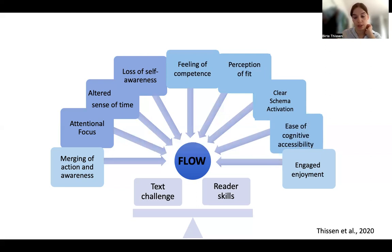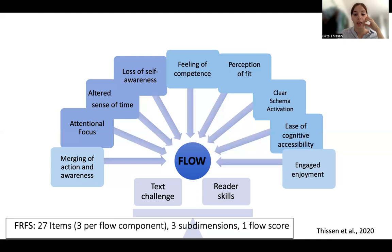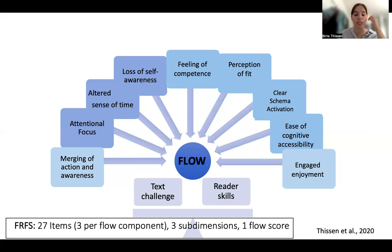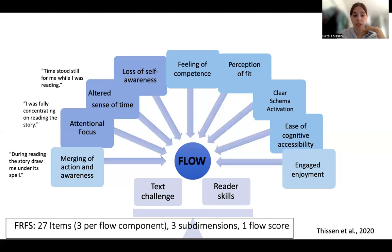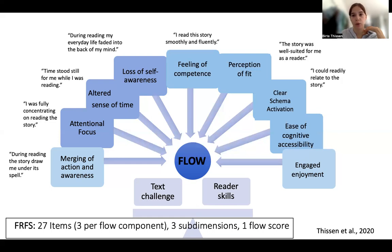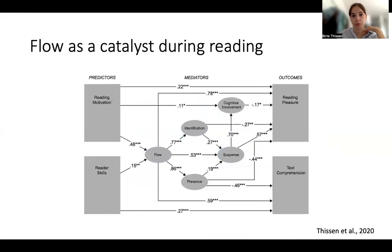Starting from this, I developed a self-report measure for flow during reading: the Fiction Reading Flow Scale, or FRFS, which is 27 items — three per flow component across three sub-dimensions — and in the end we can calculate a joint flow score. Here are some example items from the scale.